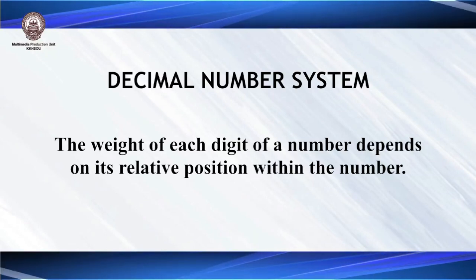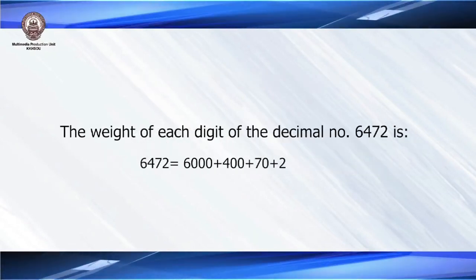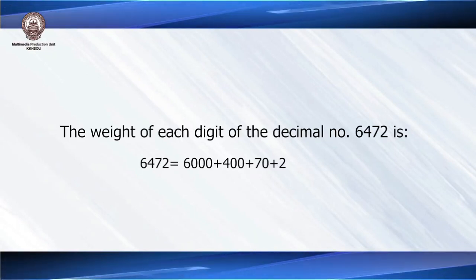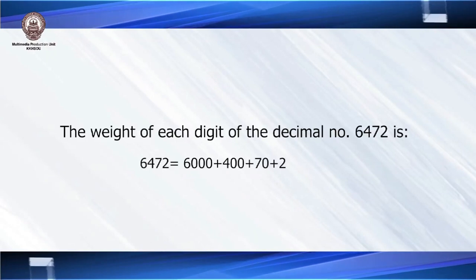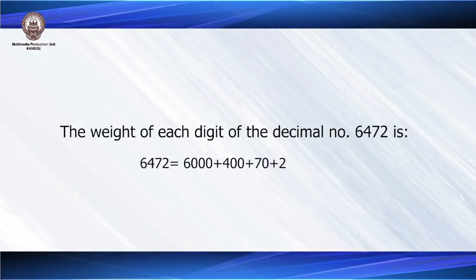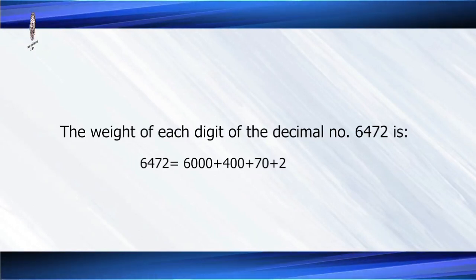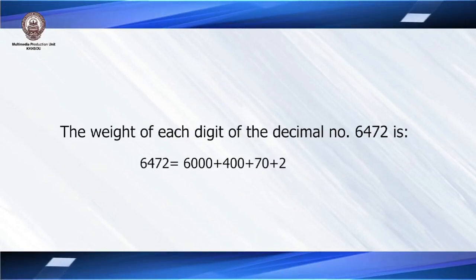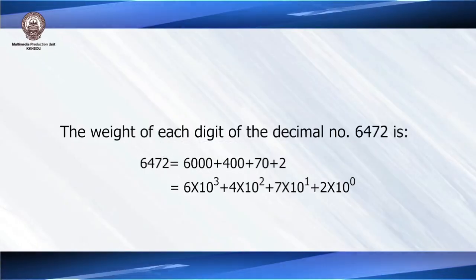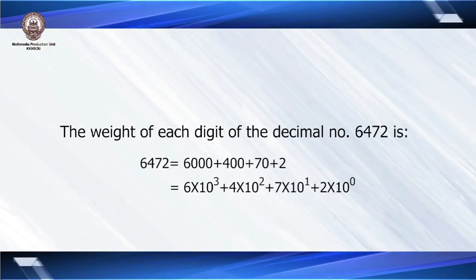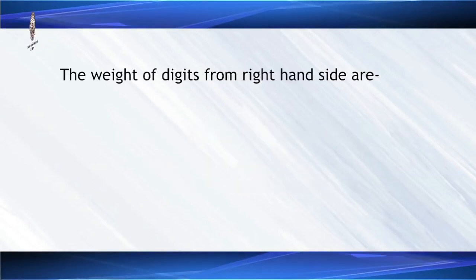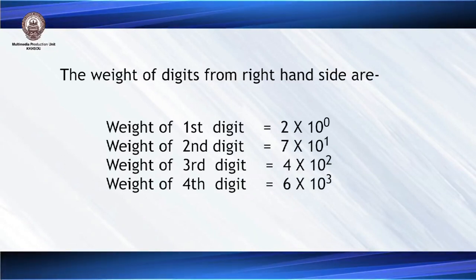For example, if we take the number 6472, we can see that 6 represents 6000, 4 represents 400, 7 represents 70, and 2 represents just 2. So it depends on the relative position. The position starts from the right-hand side. The digit 2 is in the units place, so we calculate its weight as 2 into 10 to the power 0.